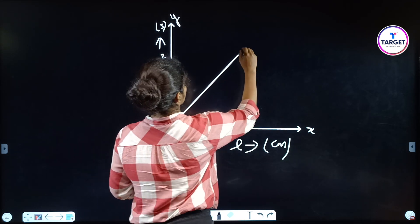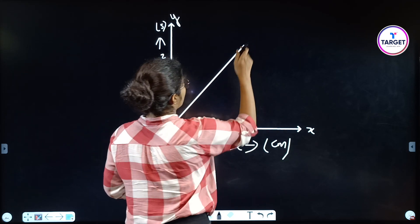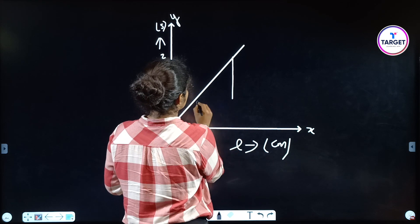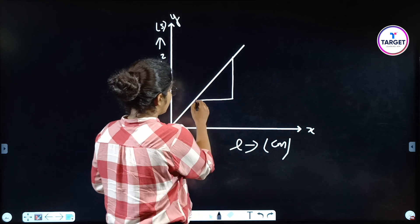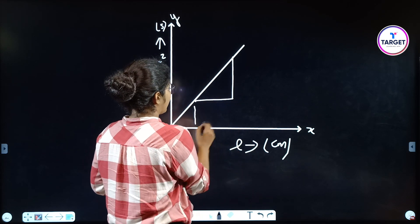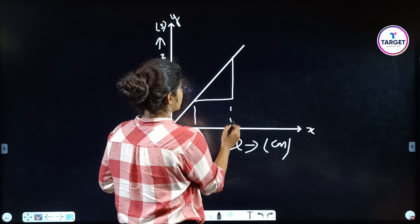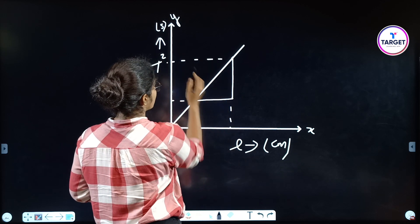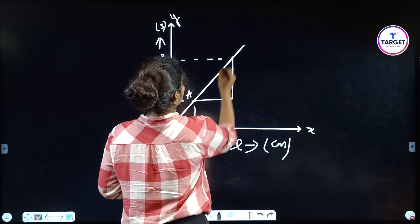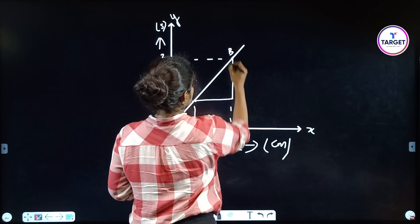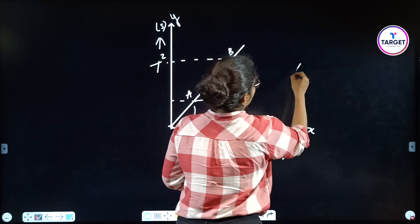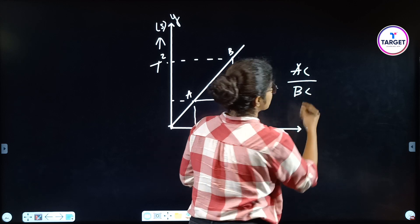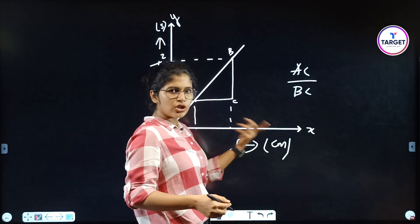After plotting the points and connecting them, you have to find the slope. Take corresponding x-axis and y-axis differences. If you label the points a, b, c, then the slope is AC divided by BC.